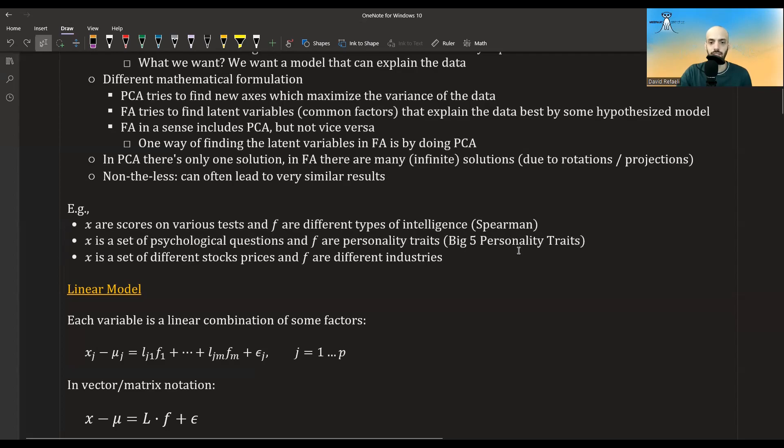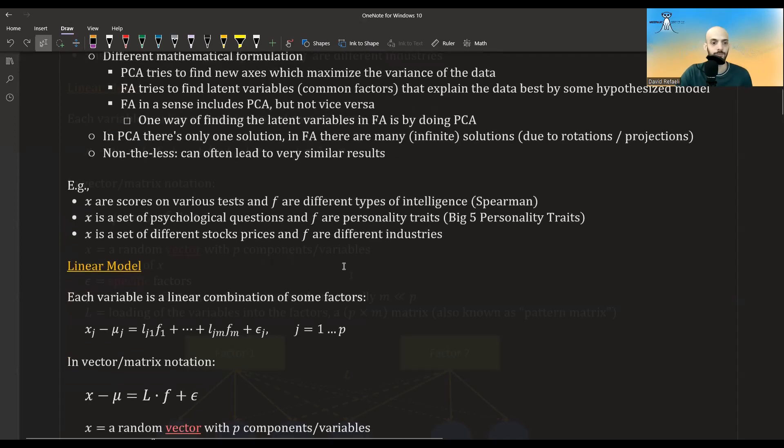Another example is that X is a set of psychological questions and F are personality traits. And if I'm not mistaken, again, the big five personality traits were discovered using factor analysis. So if you ever heard of the big five personality traits, well, you owe them to statistics and factor analysis. Another example, X could be a set of different stock prices and F could be different industries. For example, tech industry, agriculture industry, energy industry, etc.